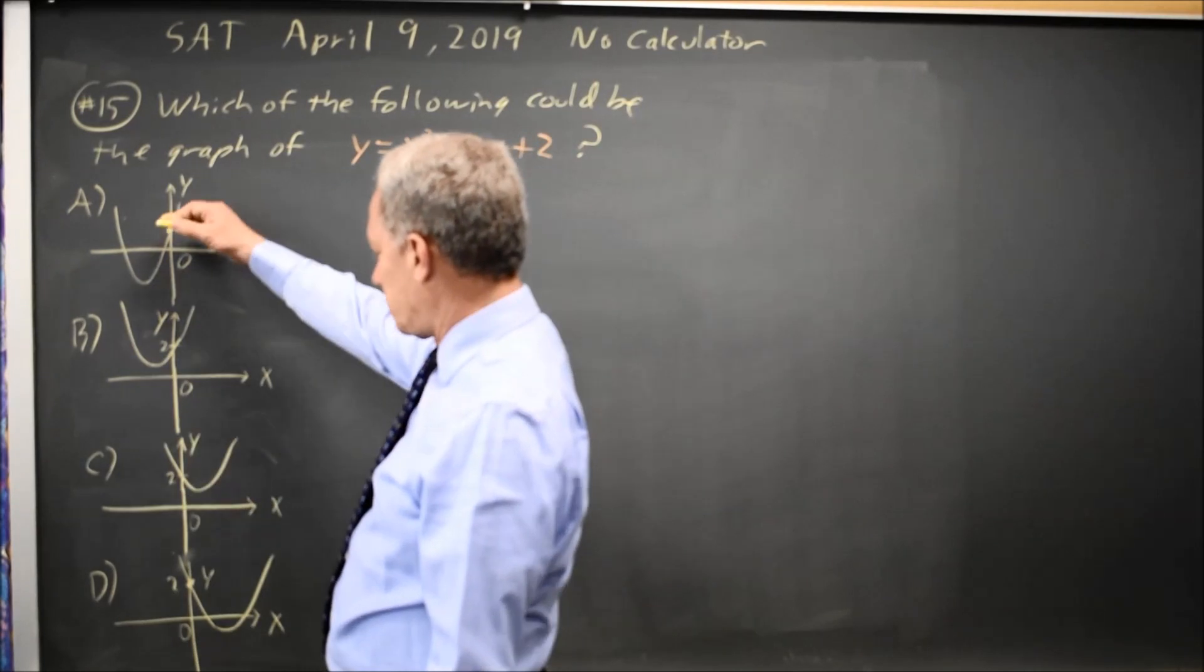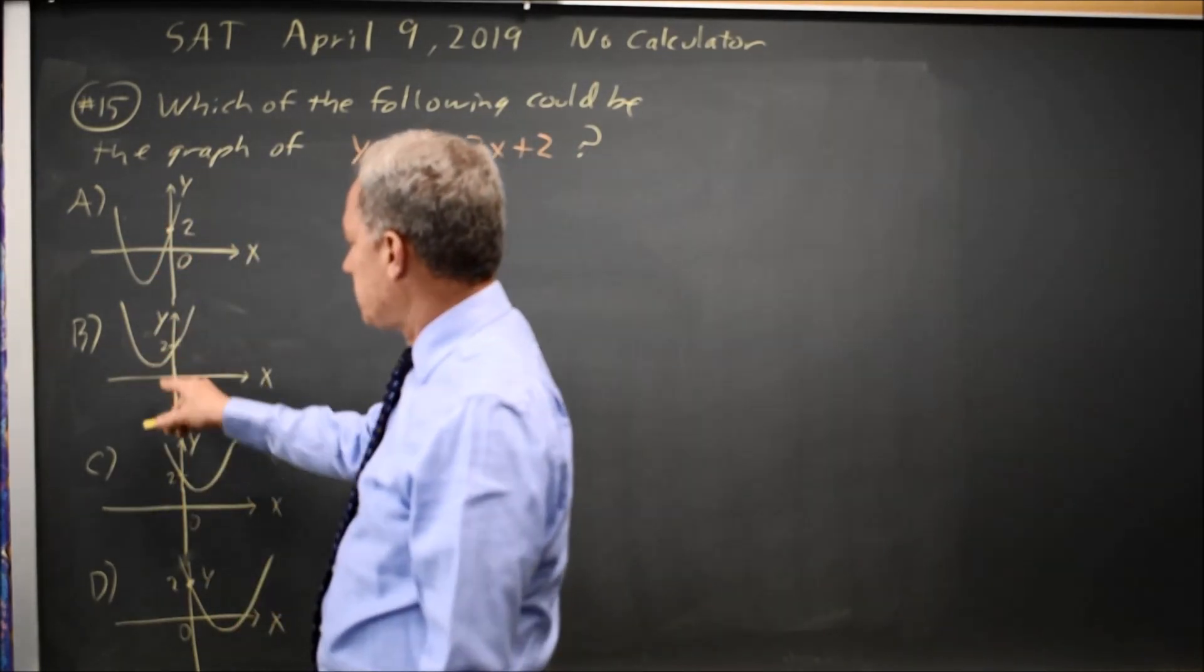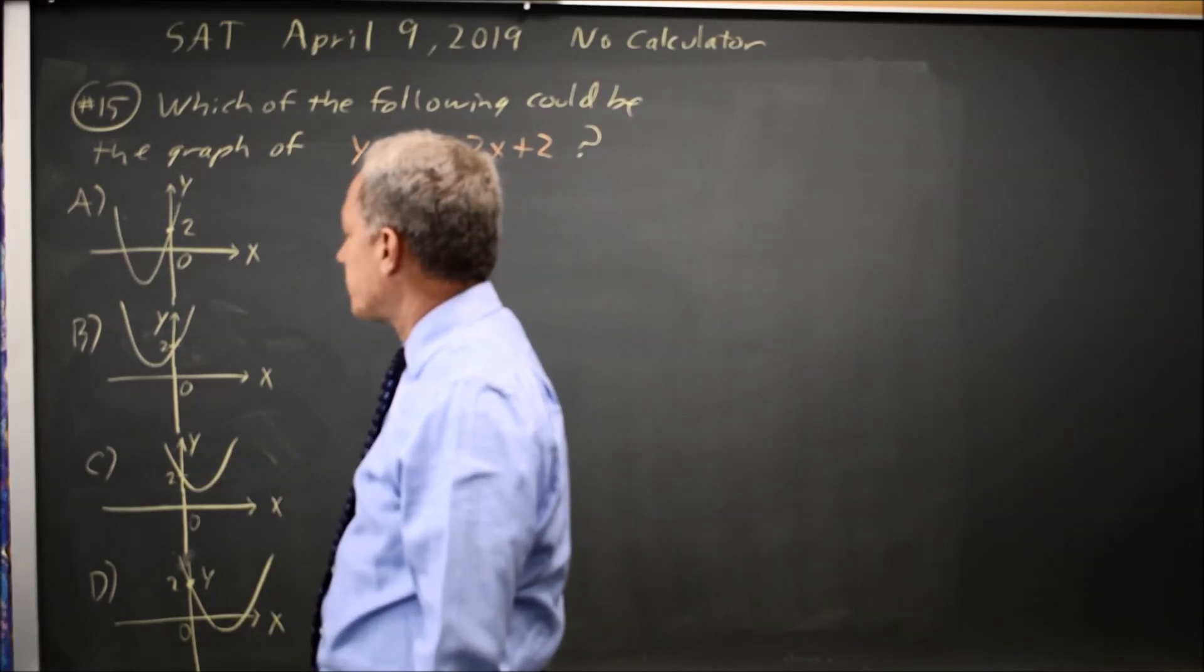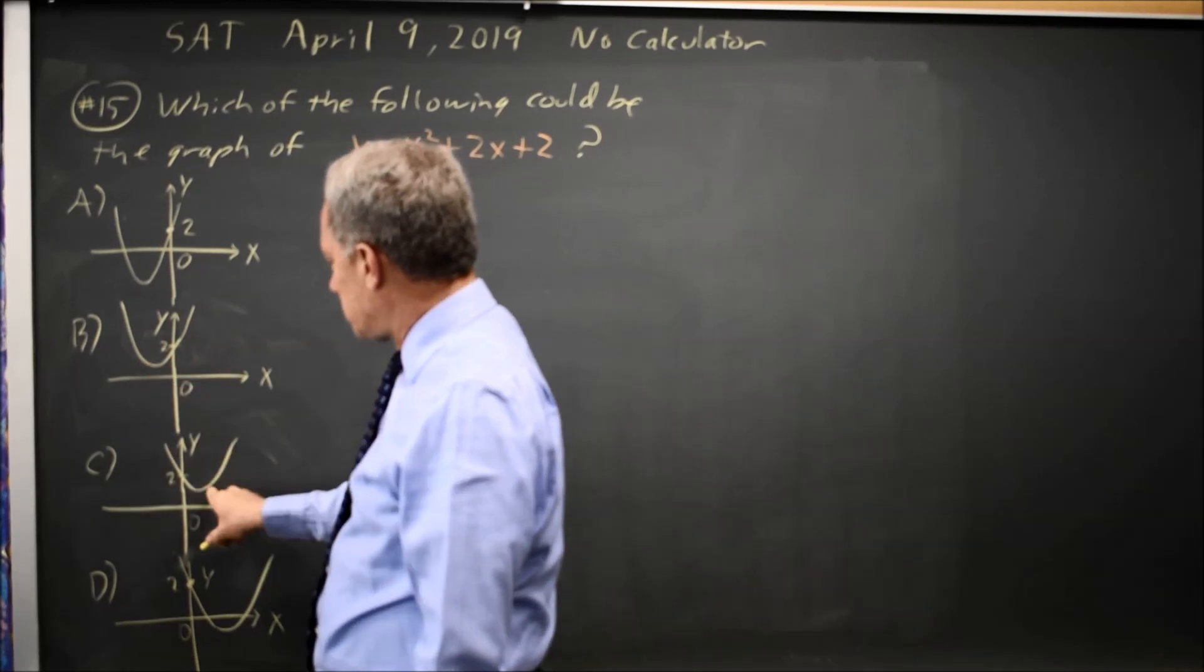Looking at the choices, choice A and D say the parabola goes negative, B and C say they don't go negative. The other thing they're asking is, is the vertex to the left of the origin or to the right of the origin?